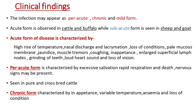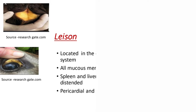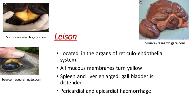Peracute form is characterized by excessive salivation, rapid respiration, and is seen in purebred as well as crossbred cattle. Chronic form is characterized by inappetence, variable temperature, anemia, and loss of condition. The different lesions of anaplasmosis are located in the organs of the reticuloendothelial system. All mucous membranes turn yellow. Spleen and liver are enlarged and the gallbladder is distended. There is pericardial and epicardial hemorrhage. The picture above shows the different lesions of anaplasmosis.